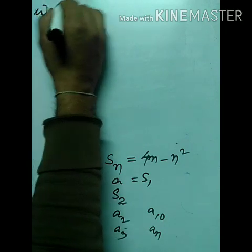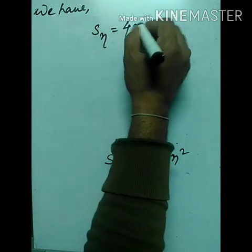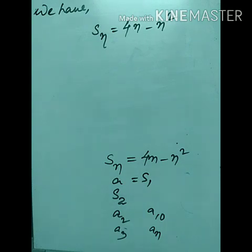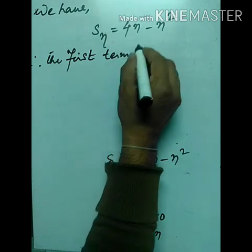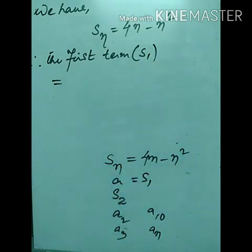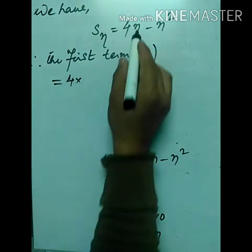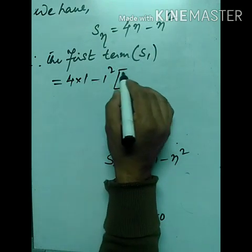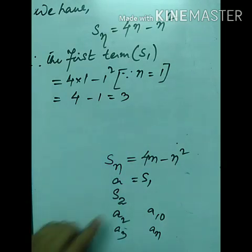Solution: given Sₙ = 4n − n². To find the first term, that is S₁: replace n = 1, so S₁ = 4×1 − 1² = 4 − 1 = 3. Therefore the first term is 3.